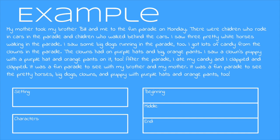It was a fun parade to see with my brother and my mother. It was a fun parade to see the pretty horses, big dogs, clowns, and puppy with purple hats and orange pants too. Take a look at the graphic organizer at the bottom. You can see we have a spot for setting and characters. And then we're going to look at the events and put them in order with the beginning, middle, and end. This should be familiar.